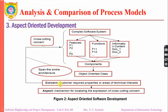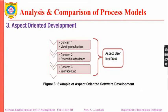A concern is a customer-required property or area of technical interest. An aspect is a mechanism for localizing the expression of a cross-cutting concern. For example, user interface is an aspect because it spans the entire architecture throughout the software. Concerns such as viewing mechanism, extensible affordance, and interface kind are all concerns treated as aspects because they span the entire architecture.